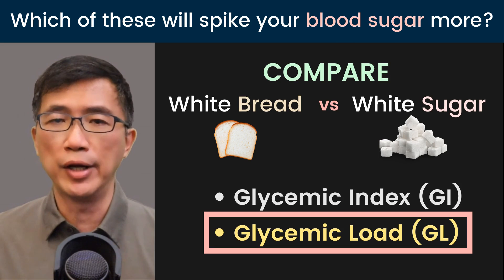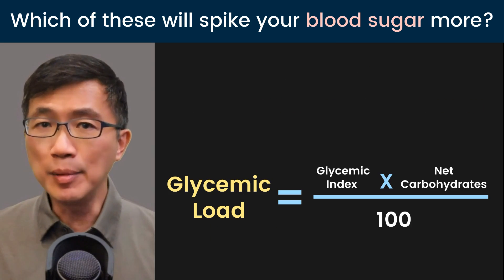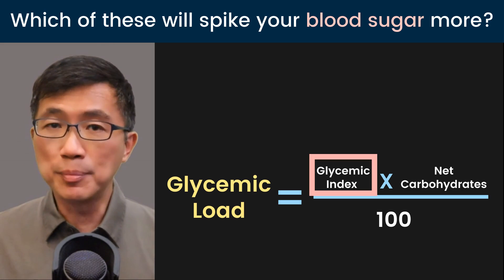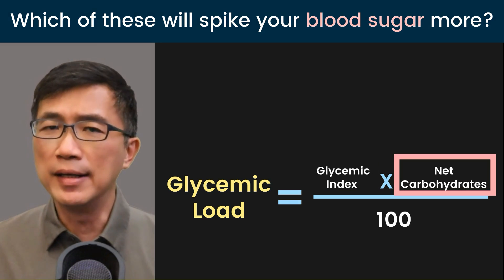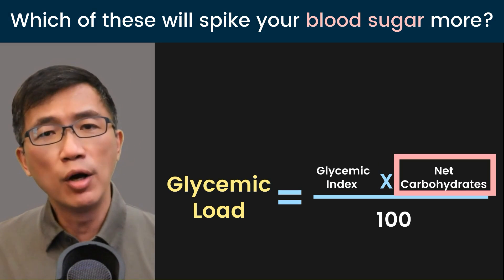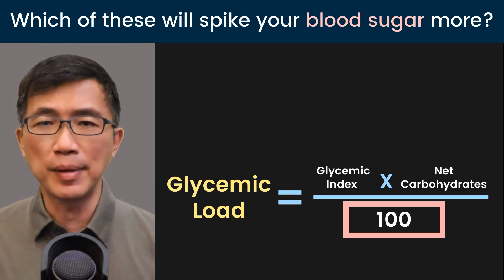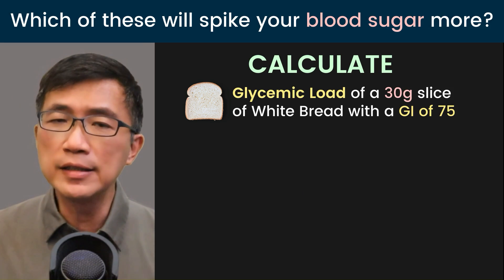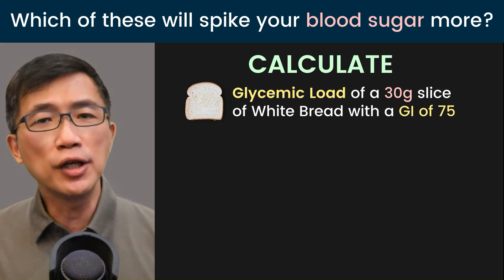Next, let's look at the glycemic load (GL) of white bread versus white sugar. Glycemic load is calculated by this formula: multiply the glycemic index of the food by the net carbohydrates in grams for that serving of food, then divide by 100.